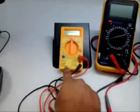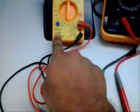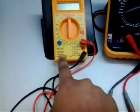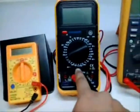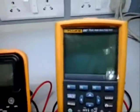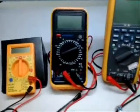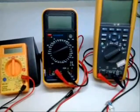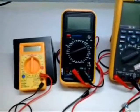This one is DT830D. This and the other one is from VARTECH, and this is from Fluke 287. We are going to demonstrate how current is measured by using multimeters.